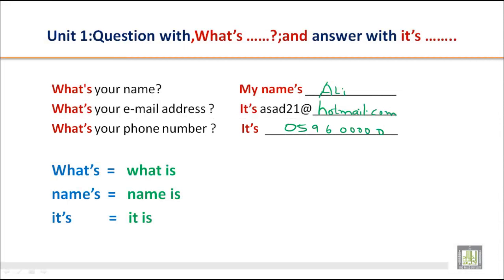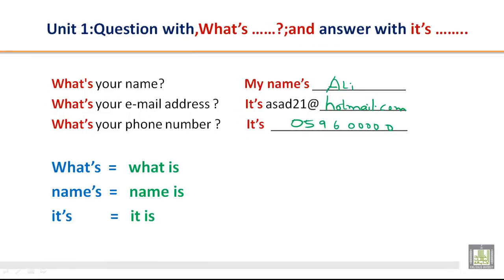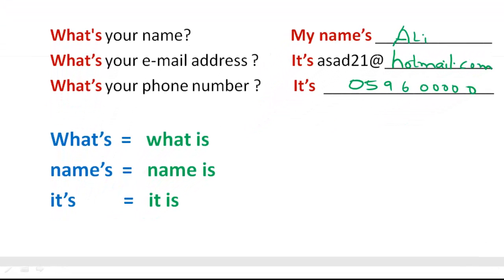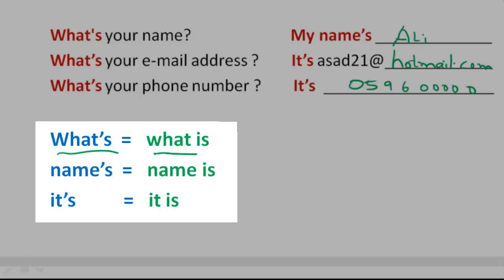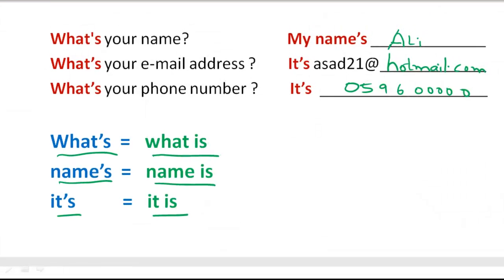In this unit we have used a lot of contractions. 'What's' is a contraction for 'what is.' 'Name's' is a contraction for 'name is.' 'It's' is a contraction for 'it is.'